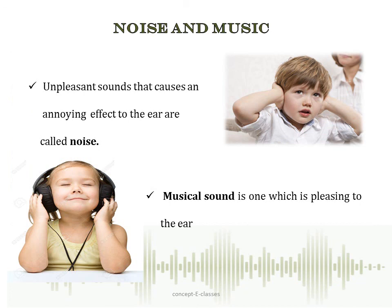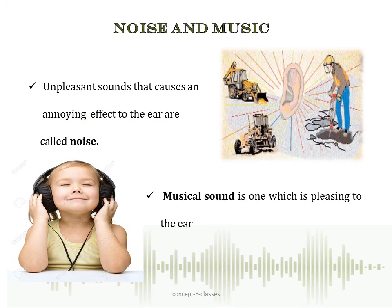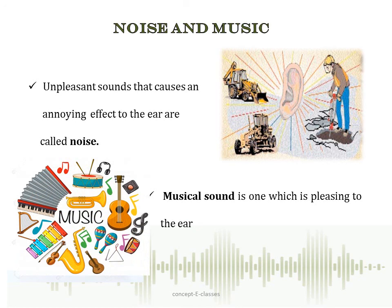The next topic is noise and music. We have different types of sound around us — sometimes a sound is pleasing, and sometimes it causes discomfort. Unpleasant sounds that cause an annoying effect to the ear are called noise; for example, sound from a construction site. Music is sound which is pleasing to the ear, such as sounds from a musical instrument that create a soothing effect.